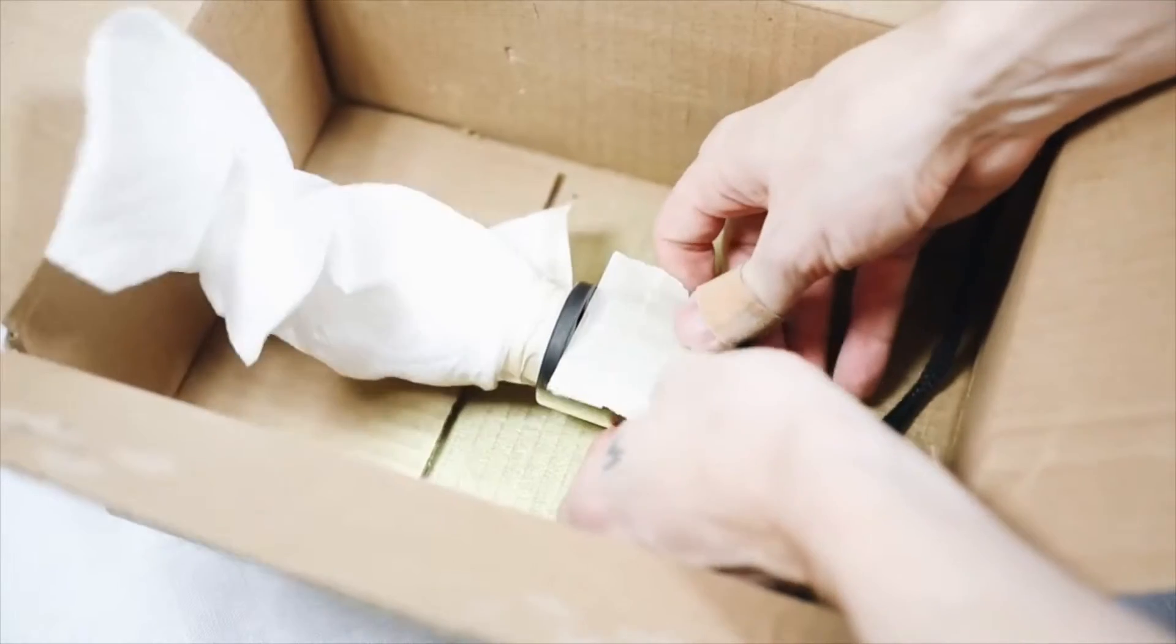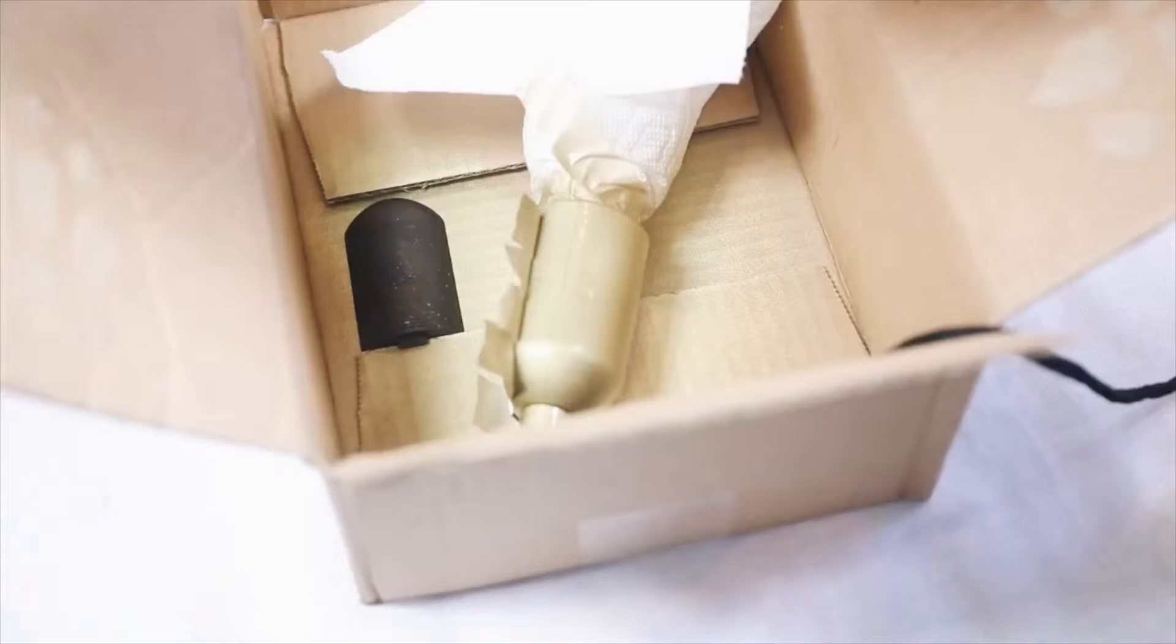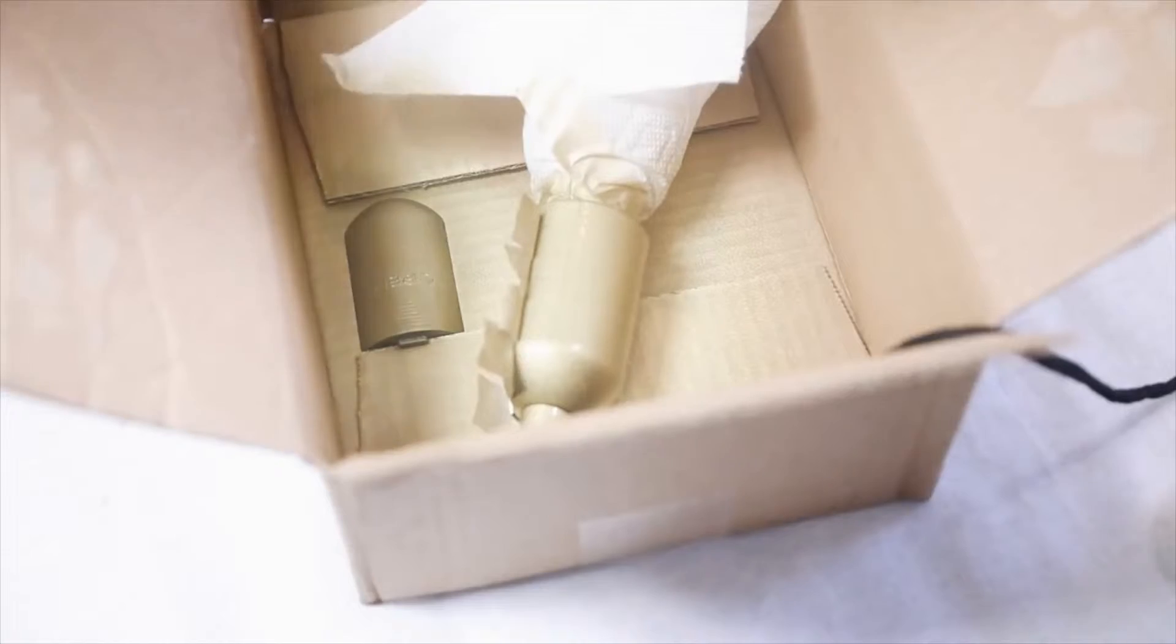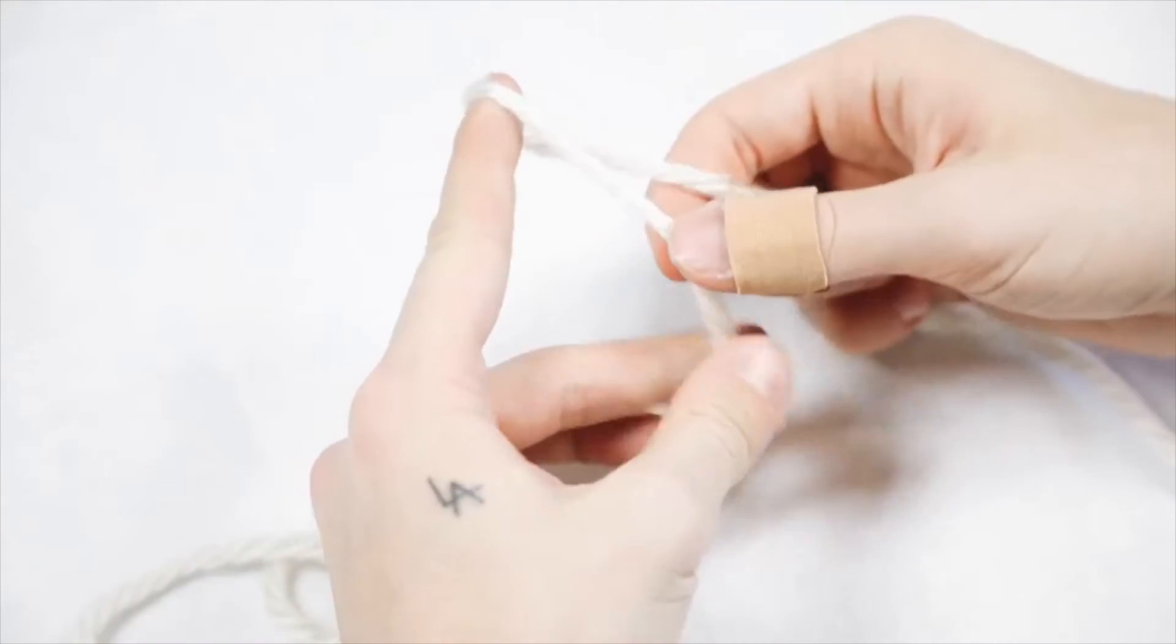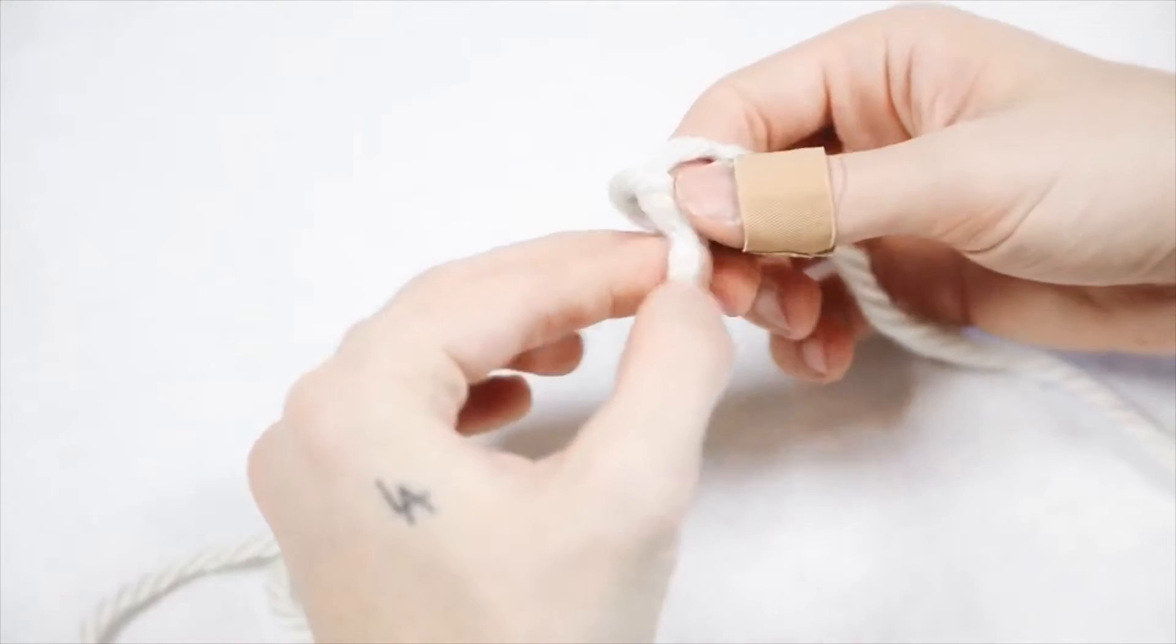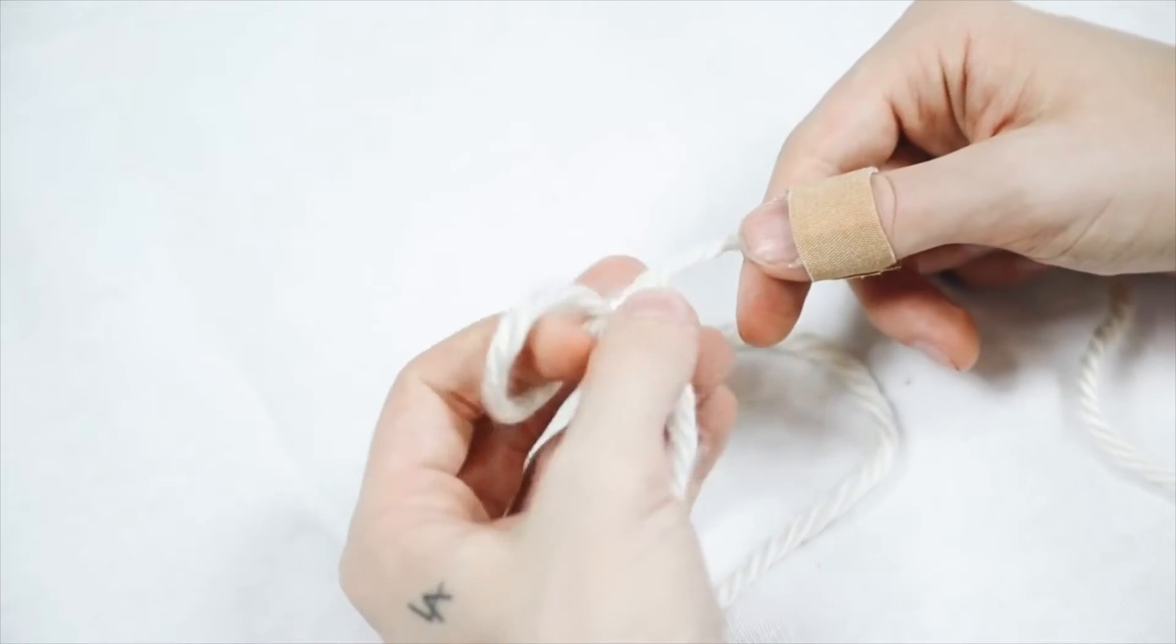So I ended up just using a 14 karat brass spray paint—you guys all know my love for spray paint. I think it looks so good, it really transforms anything and makes it look so expensive. I sprayed the little battery slot piece and then also the other piece. Now I'm creating the cord for it, so I'm just creating a loop initially as you can see on the screen here.